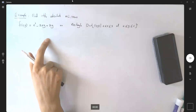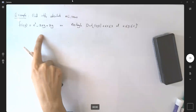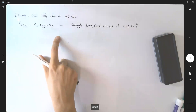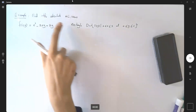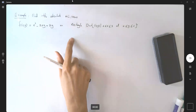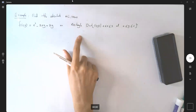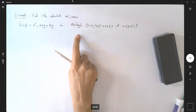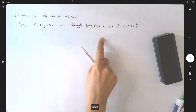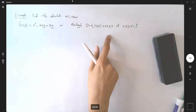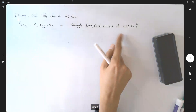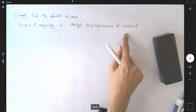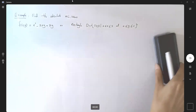Suppose you have this function, x squared minus 2xy plus 2y, and you want to find the absolute minimum and absolute maximum of this function bounded to a rectangle. The x values are bounded between 0 and 3, and the y values are bounded between 0 and 2.